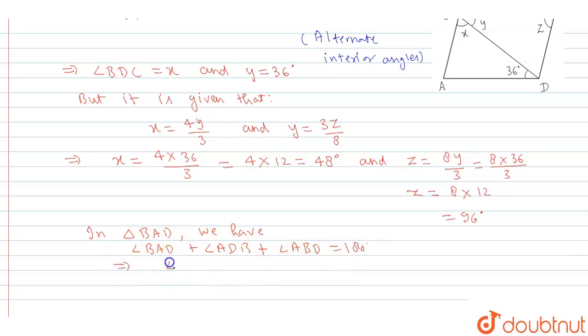Okay, so from here angle BAD is equal to 36 degrees plus x is equal to 180 degrees, or we can write angle BAD is equal to 180 degrees minus, is 36 plus x is 48.